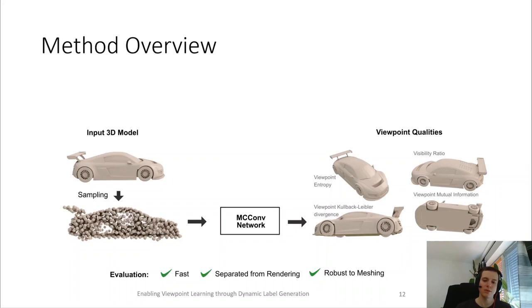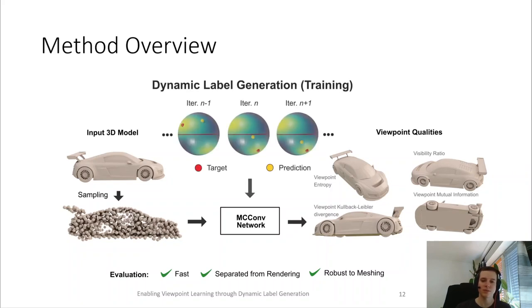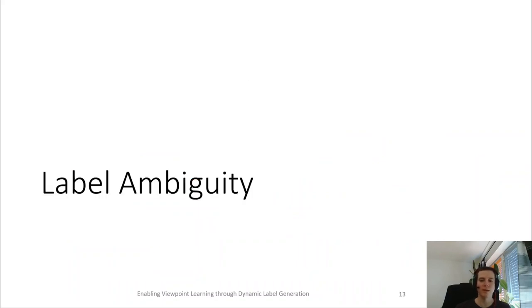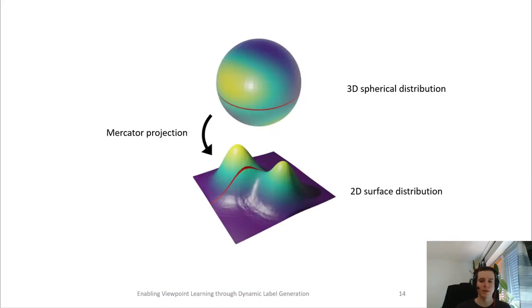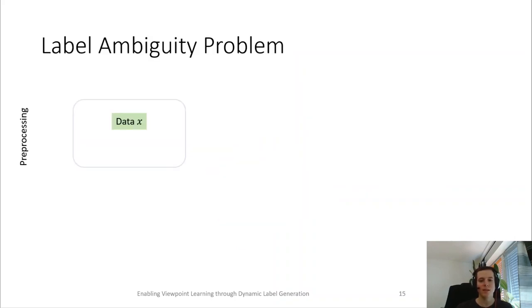The key component to predicting viewpoints is our novel dynamic label generation, which resolves inherent label ambiguity problems. So let's take a look at the label ambiguity problem. In the following, we will visualize the spherical view quality distributions with a 2D surface projection. Let's take a look at the standard deep learning pipeline.